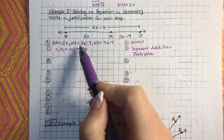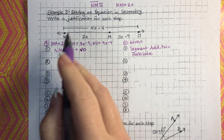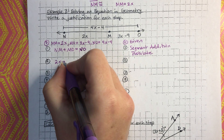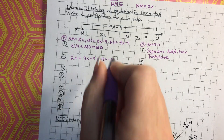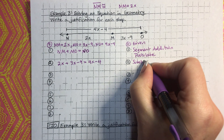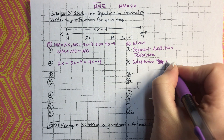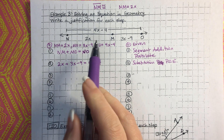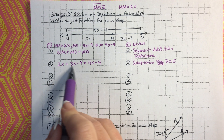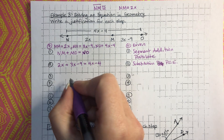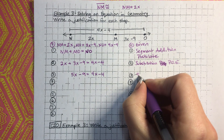From here, we're going to substitute the given values into this formula. Instead of writing NM, we write 2x; MO is 3x minus 9; and NO is 4x minus 4. That is the substitution property of equality. Now we simplify this side of the equation by combining like terms: 2x plus 3x is 5x, giving us 5x minus 9 equals 4x minus 4. That's called simplify.